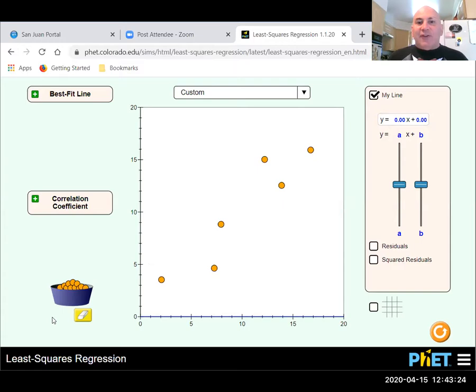I'm just going to pick some data points and put them out here randomly. Now what I need to do is I'm going to try to eyeball in what I think is the best fit line for that data. So there is a slope. I don't really like that line.